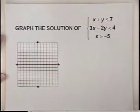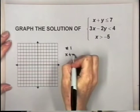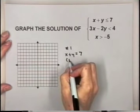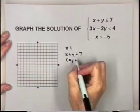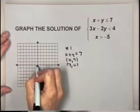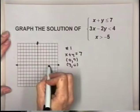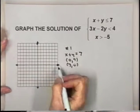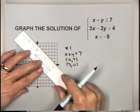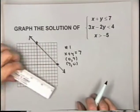Using the same steps as before. For inequality one, the corresponding equation is x plus y equals 7. Using intercepts: if x is 0, y is 7; if y is 0, x is 7. So we plot (0, 7) and (7, 0). This inequality includes equals, so we draw a solid boundary line.